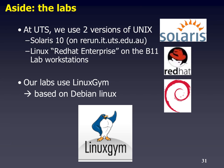At UTS, we use two versions of Unix: Solaris, written by Sun and now owned by Oracle, and a commercial version of Linux called Red Hat Enterprise Linux. You can run the open-source version called CentOS. We use the commercial one because we want it supported on our hardware. Linux Gym, by the way, is based on Debian—actually running Debian 4, an ancient version, but still based on an old distro.